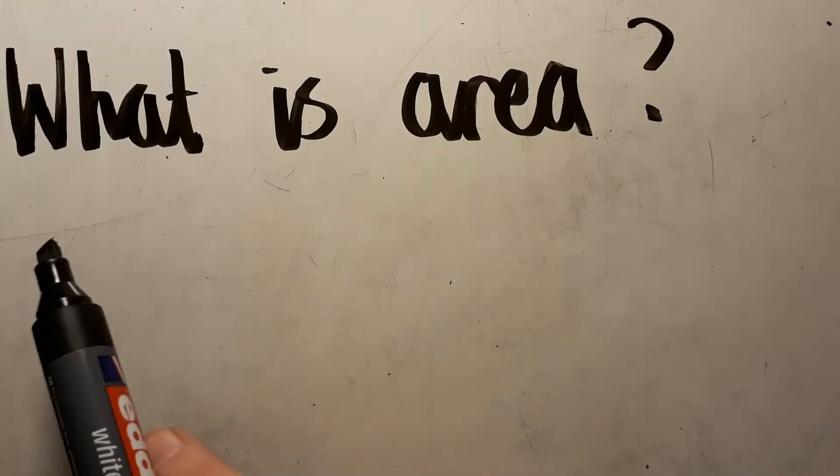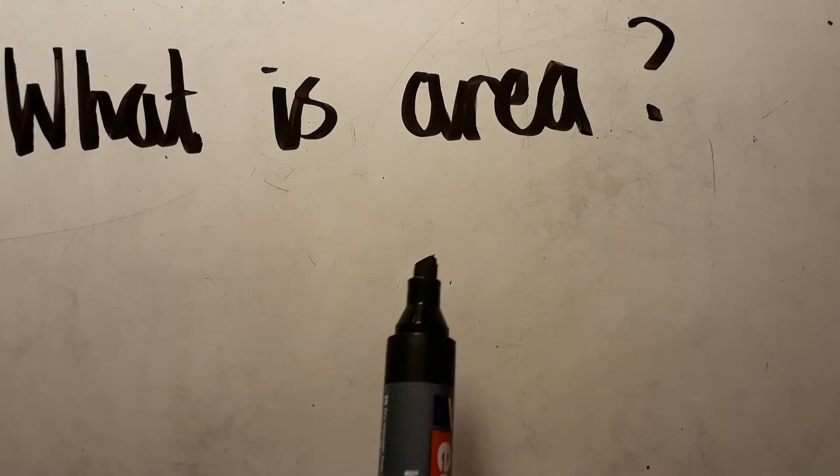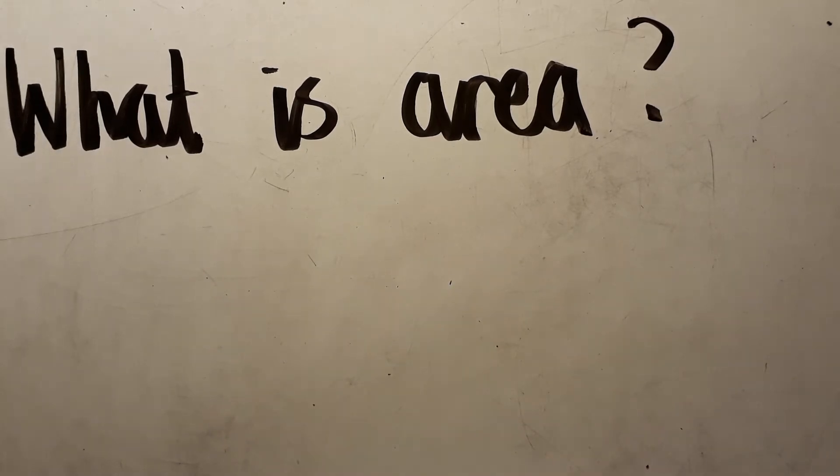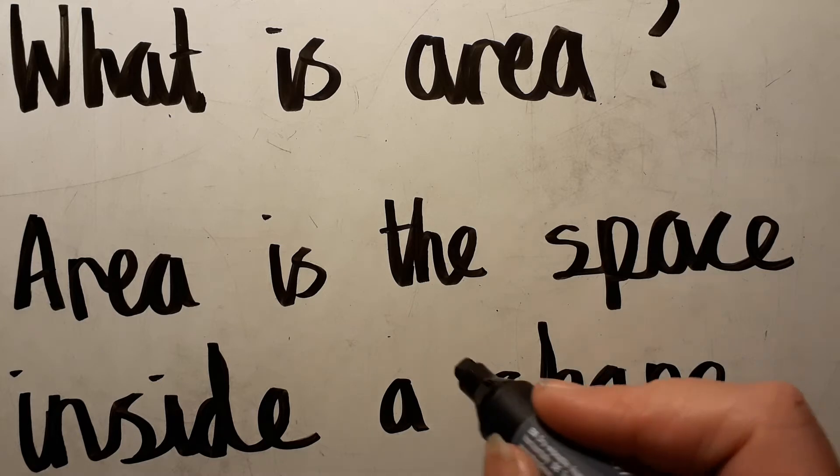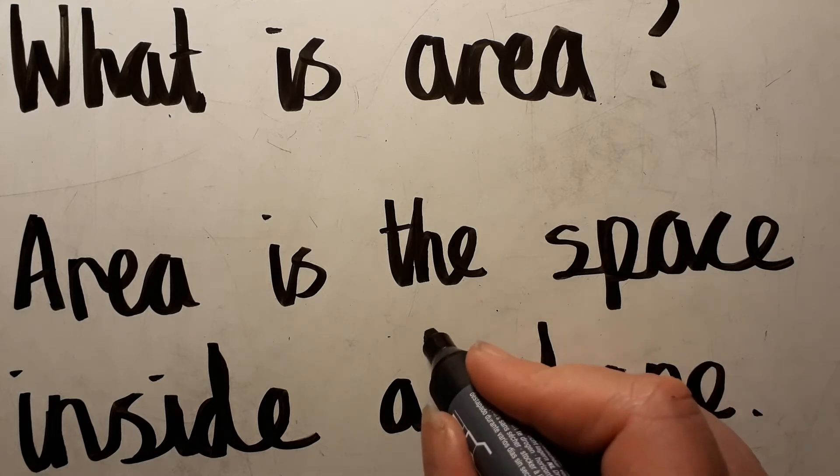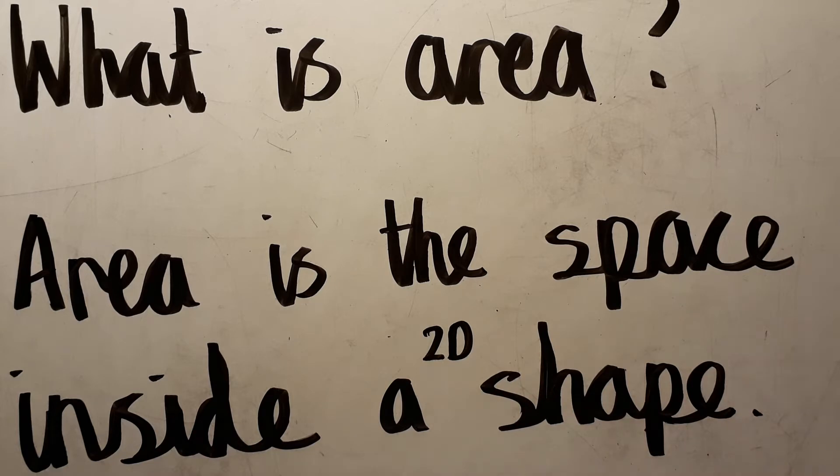So we'll just remind ourselves what area is. We know that area is a space inside a shape and if we want to be really mathematically correct, we say a 2D shape because that means it's a flat shape.